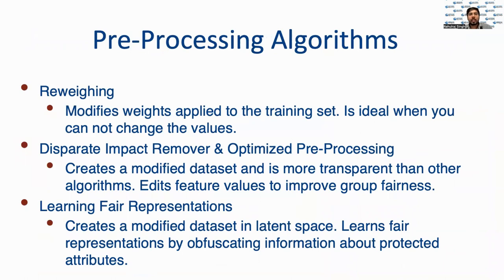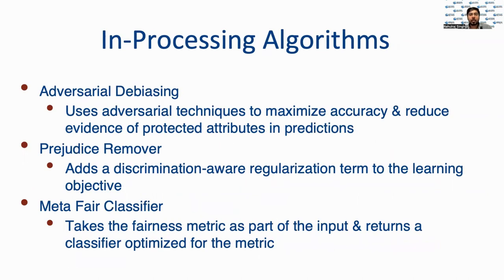Looking at preprocessing algorithms: de-weighing modifies the weights of different training samples; disparate impact remover edits feature values to improve group fairness; optimized pre-processing modifies training data features and labels; and learning fair representations learns fair representations by obfuscating information about protected attributes. Some in-processing algorithms include adversarial de-biasing, which uses adversarial techniques to maximize accuracy and reduce evidence of protected attributes in predictions; prejudice remover, which adds a discrimination-aware regularization term to the learning objective; and the meta-fair classifier, which takes a fairness metric as part of the input and returns a classifier optimized for that metric.